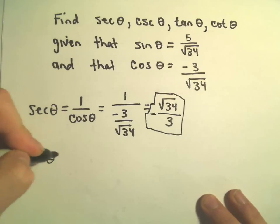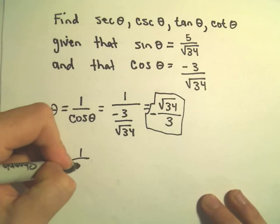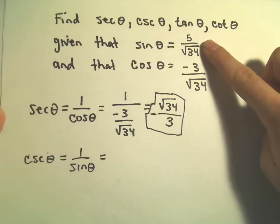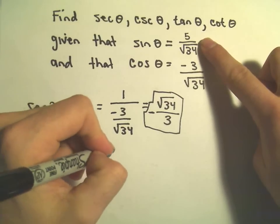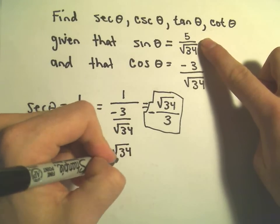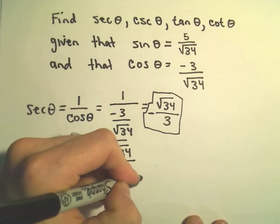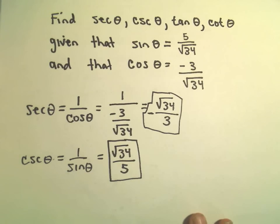Cosecant of θ, we do the exact same thing. We take 1 over sine θ. If we take 1 over sine θ, all that's going to do is flip the fraction. So the square root of 34 will go on top, the 5 will go to the denominator, and now we've got our value for cosecant of θ: √34/5.